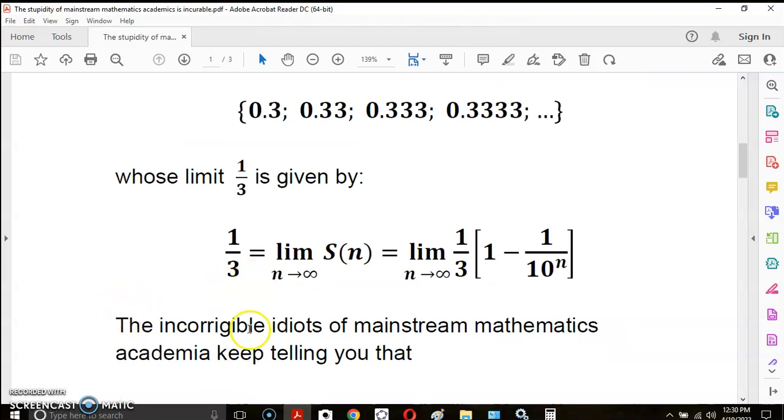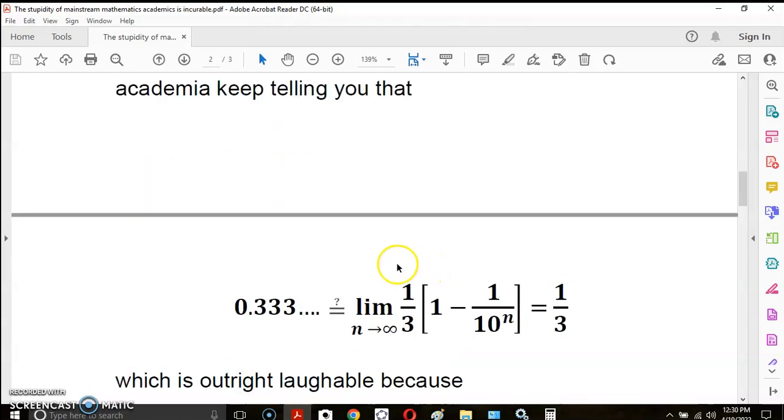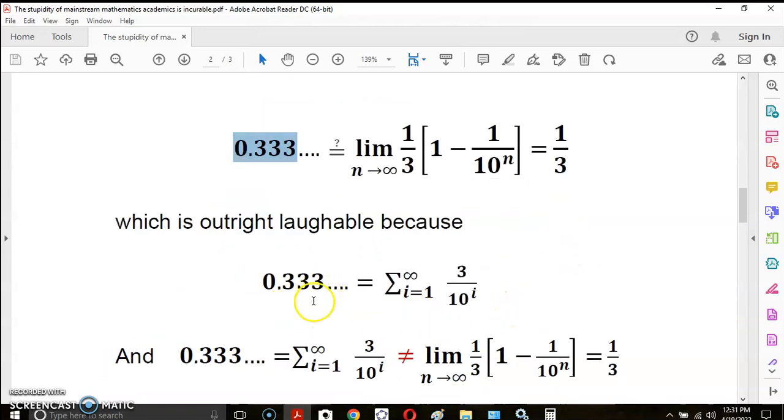It's never going to actually be equal to 1/3 because for this to be equal to 1/3 it means that an n exists here such that this expression is zero. That's impossible and of course the incorrigible idiots of mainstream mathematics academia keep on telling you that this is equal to the limit of this which is equal to 1/3, which is outright laughable because 0.333 dot dot dot, a garbage concept if there ever was one, is equal to the sum of these terms taken forever and ever. Amen.